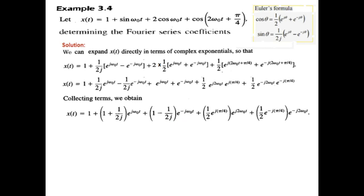And E j pi by 4, sorry, E j 2 omega not t alone. So we write here. And minus E minus j 2 omega not t. So we write it here. So these are the four terms that we have now.